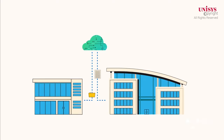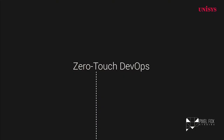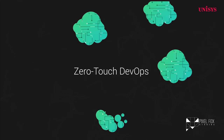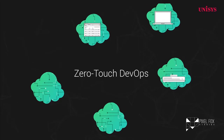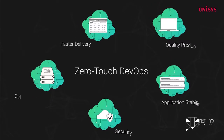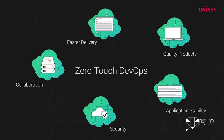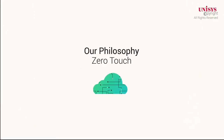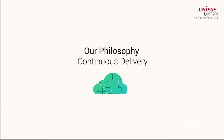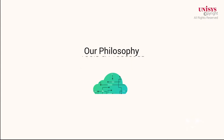We call this Zero Touch DevOps. Our DevOps method promotes collaboration and results in faster delivery, better quality products, and improved application stability. Our philosophy of Zero Touch deployment aims to achieve continuous delivery through adoption of a series of practices and integration of tools and processes.